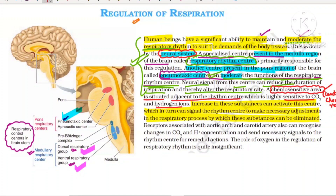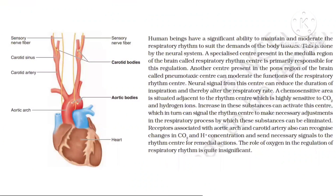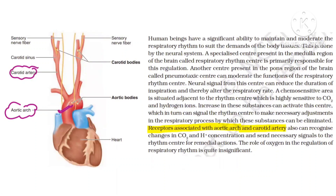Another chemosensitive area exists — receptors present in the peripheral area, known as peripheral chemoreceptors. Receptors are associated with the aortic arch and with the carotid arteries, forming the carotid bodies and aortic bodies. They will also recognize changes in carbon dioxide and proton concentration and give signals to the rhythm center for remedial action.